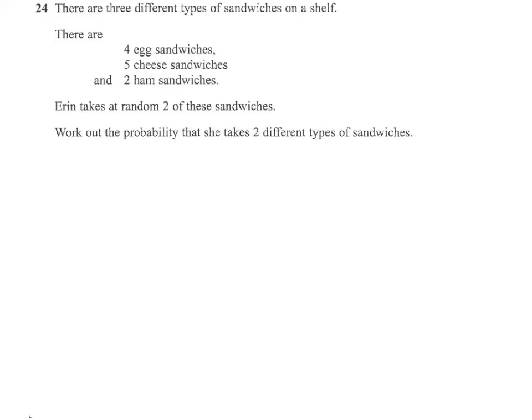There are three different types of sandwiches on the shelf. There are four egg sandwiches, five cheese and two ham sandwiches. Erin takes at random two of these sandwiches. We've got to work out the probability she takes two different types of sandwiches.